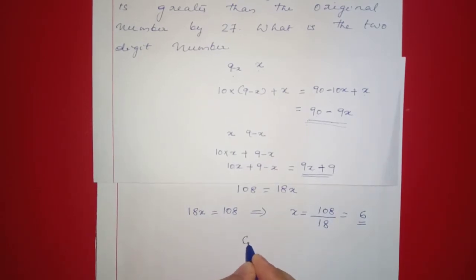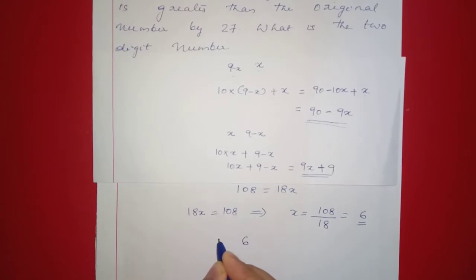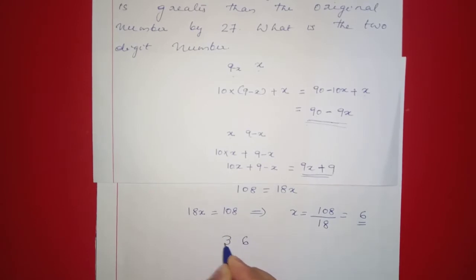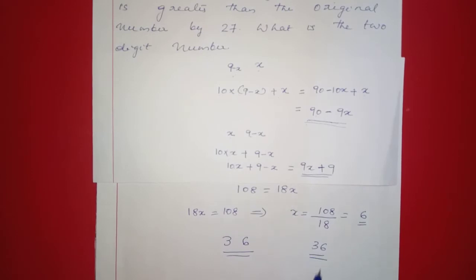Therefore x equals 6. The tens digit is 9 minus x, which is 9 minus 6, equal to 3. So the original two-digit number is 36.